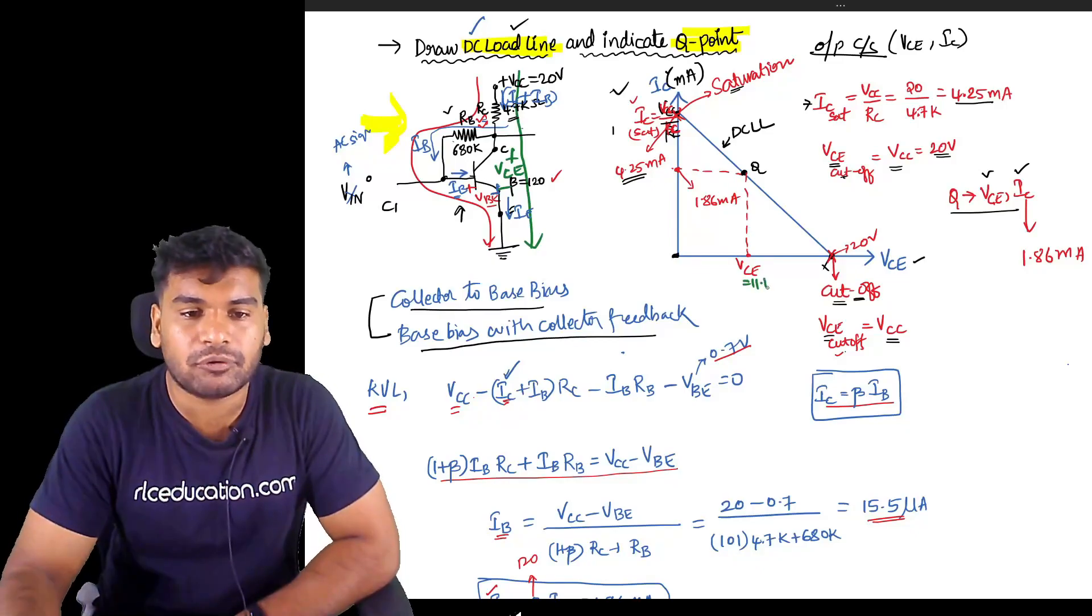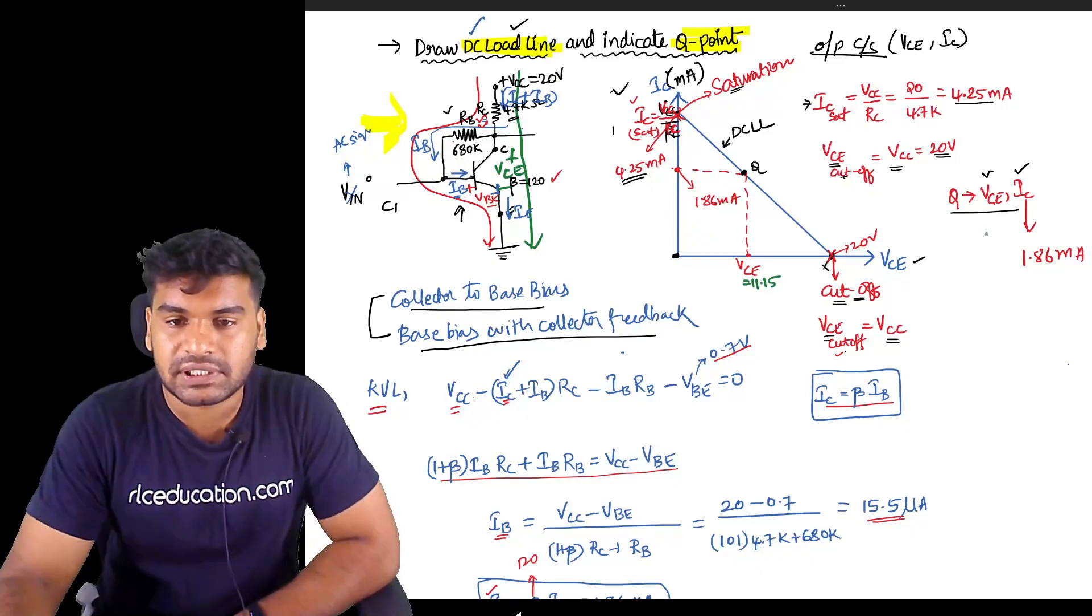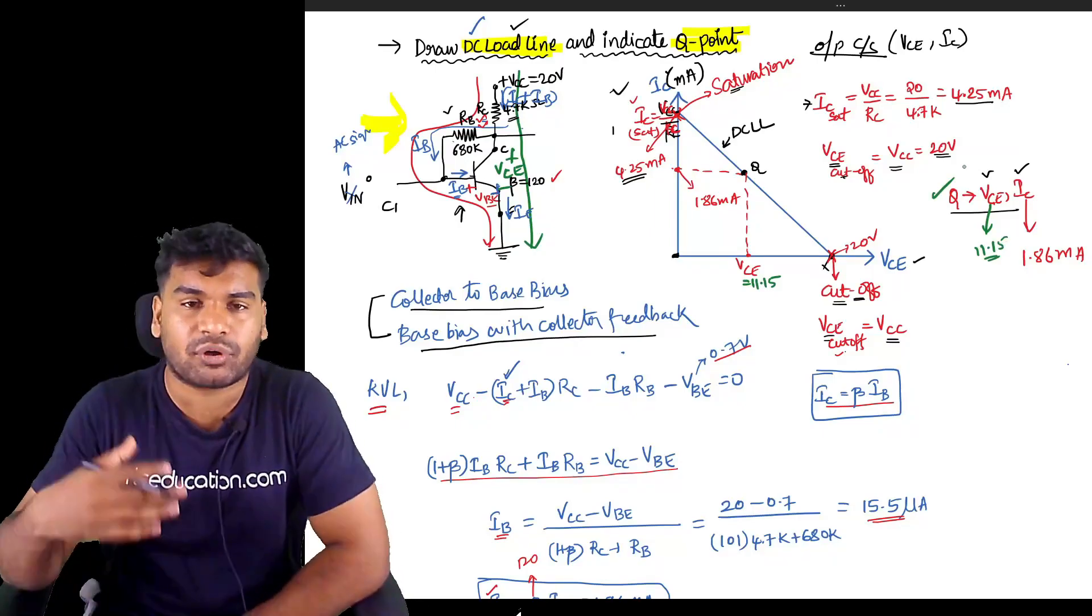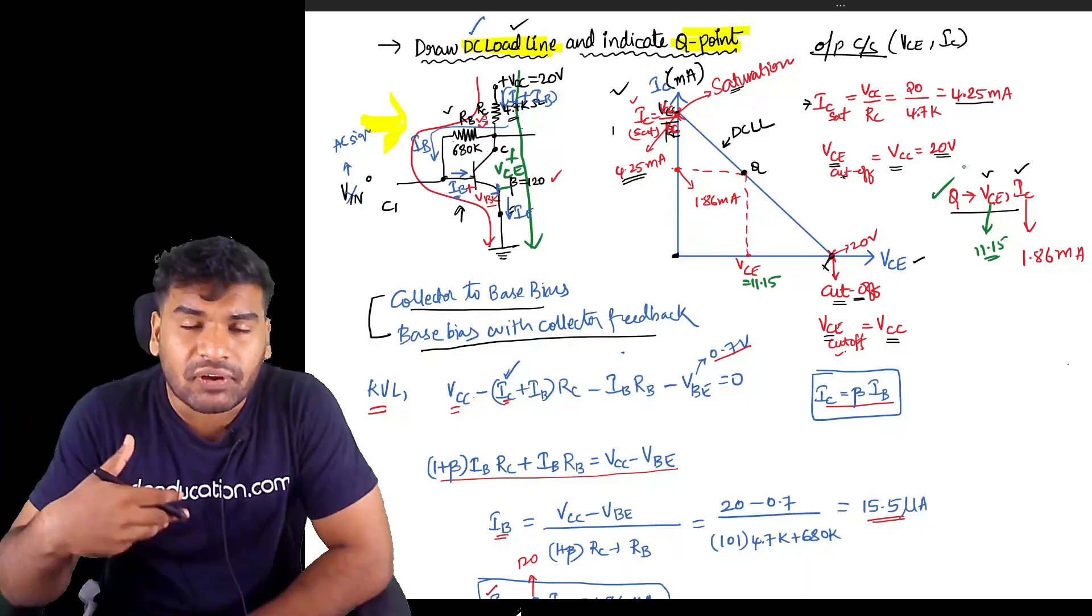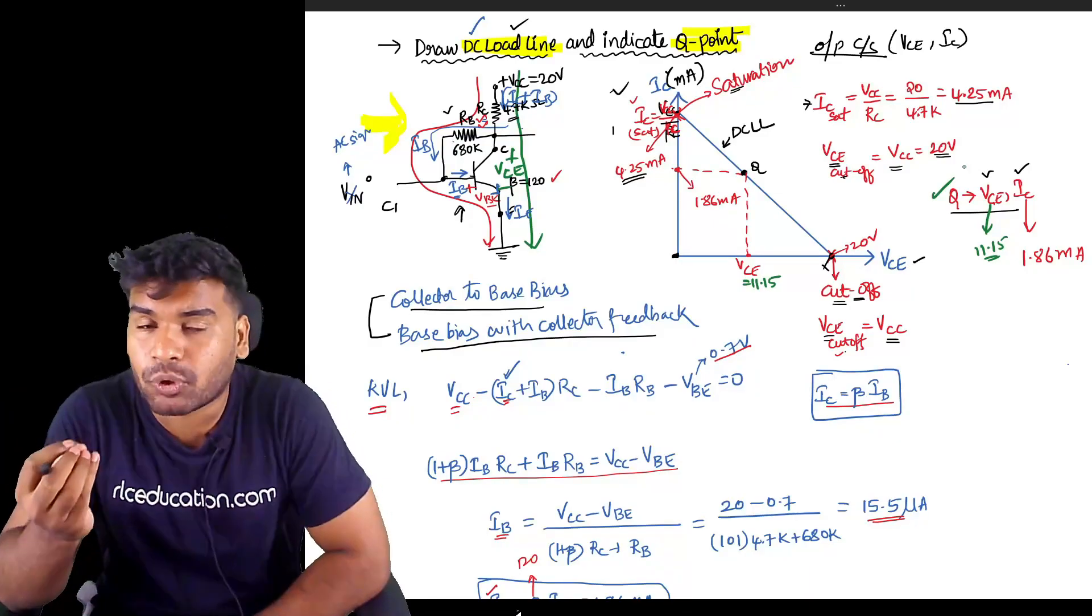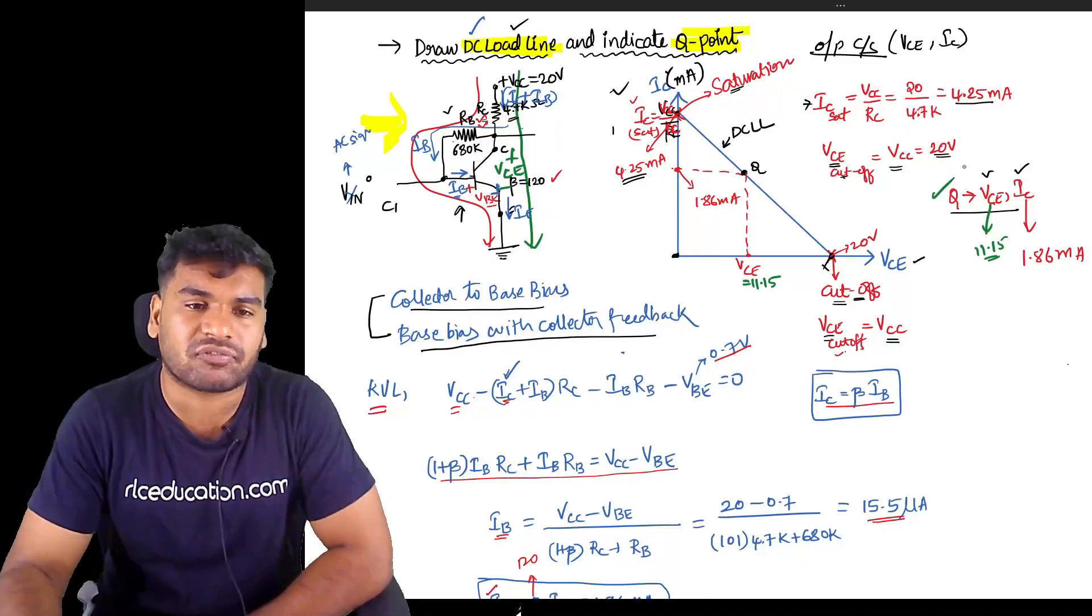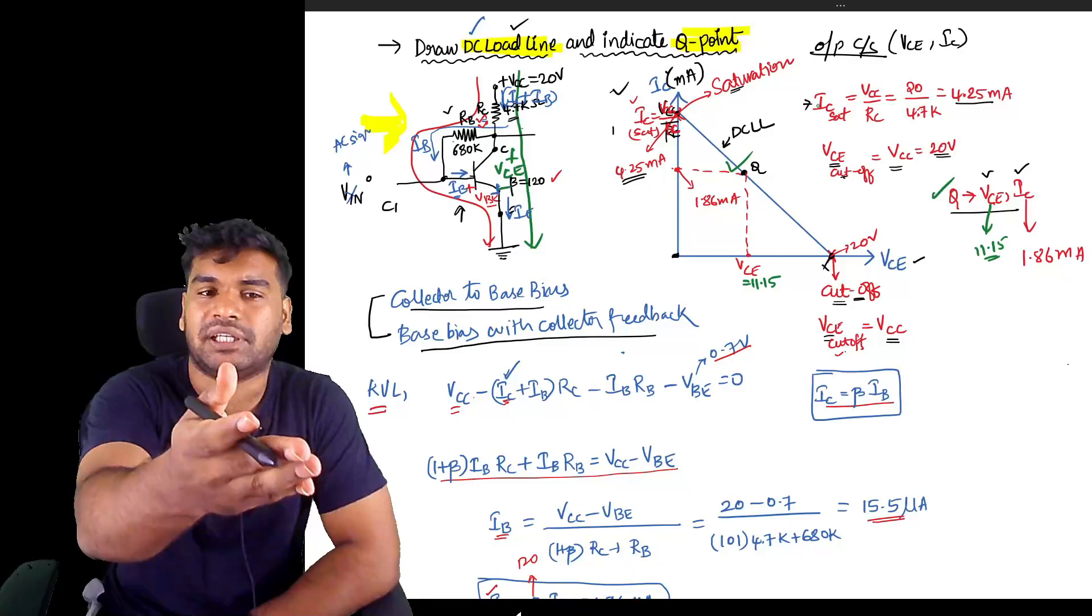So you got VCE value also which is equal to 11.15. So VCE is 11.15. The problem is done. You have found out what is the Q-point, you have drawn the load line. That's it. Now if I were to ask you what is the mode of operation of this particular transistor - saturation mode or active mode or cutoff?